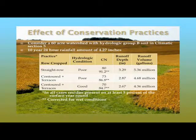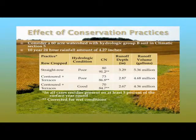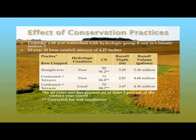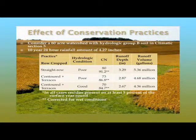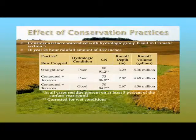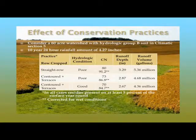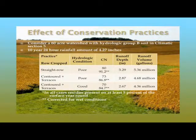For straight rows with poor hydrologic condition, using a curve number under wet antecedent moisture conditions, we'd calculate a runoff depth of about 3.29 inches from that 4.3-inch storm. Based on 3.29 inches of runoff depth from 60 acres, we'd calculate a runoff volume of 5.36 million gallons. Looking at a contoured cropping system with terraces under poor hydrologic condition — curve number of about 87 under wet antecedent moisture conditions — we'd predict a runoff depth of about 2.9 inches, or about 4.68 million gallons.